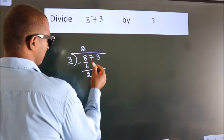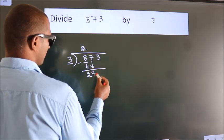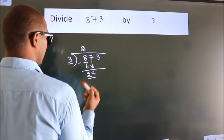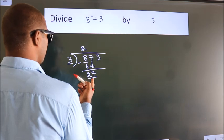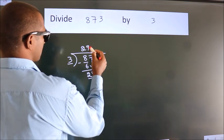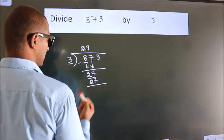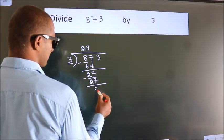After this, bring down the beside number. So 7 down. So 27. When do we get 27? In 3 table, 3 nines, 27. Now we subtract. We get 0.